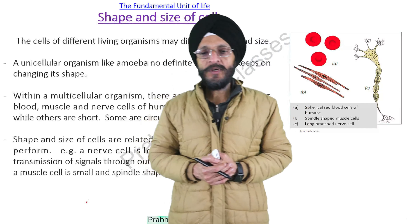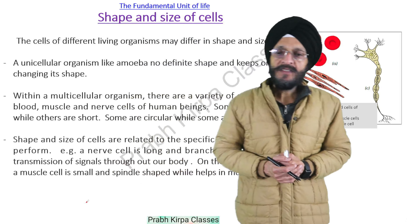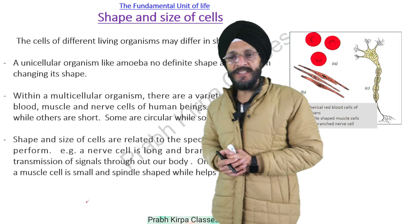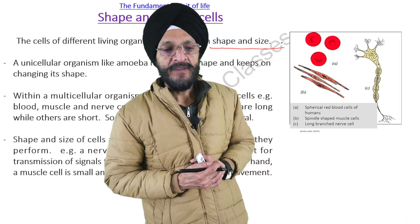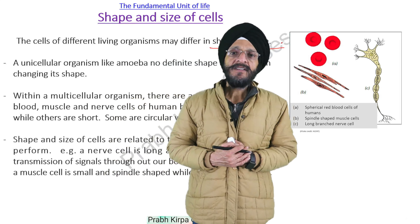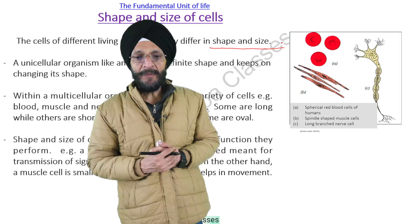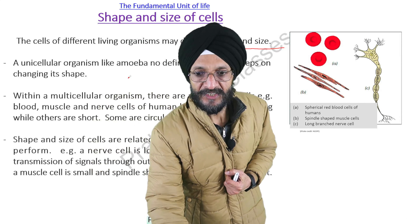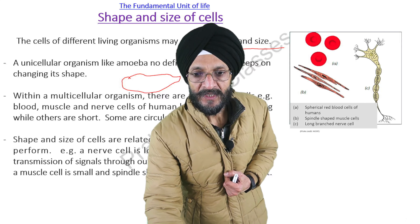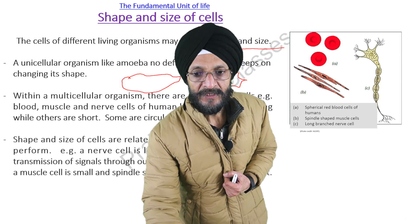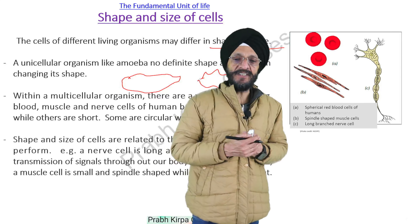The topic before us is shape and size of the cells. The cells of different living organisms may differ in shape and size. We have already seen that an example of a unicellular organism is amoeba. Amoeba has no definite shape — its shape keeps on changing.